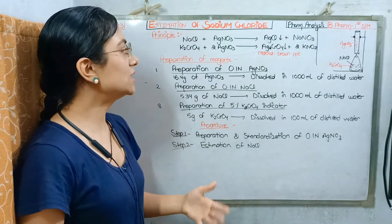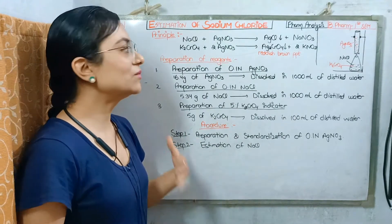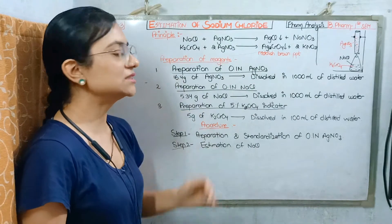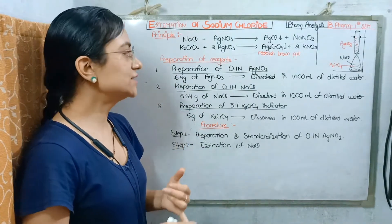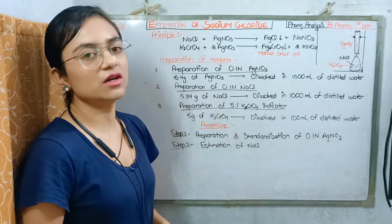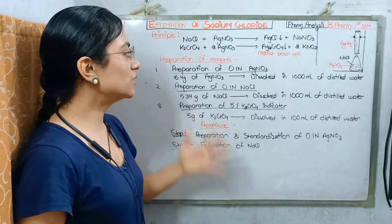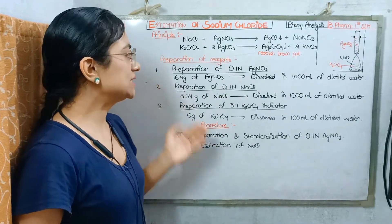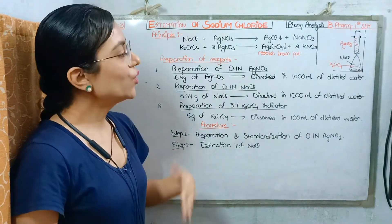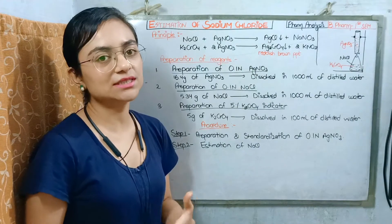If we talk about the preparation of reagents, we need to prepare three reagents. First, we will prepare 0.1 N silver nitrate (AgNO3) solution. For that, we will take 16.4 grams of AgNO3 and dissolve it in 1000 ml of distilled water.